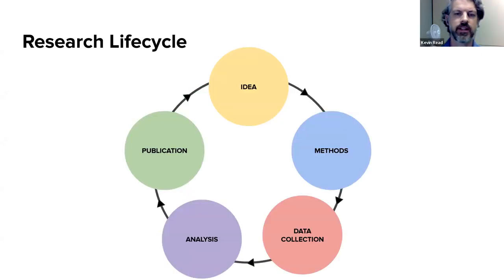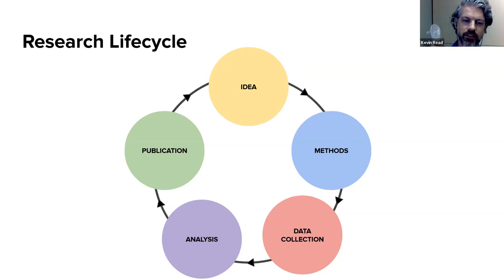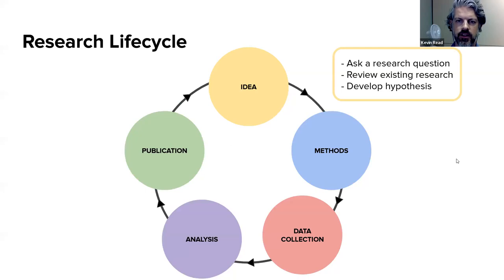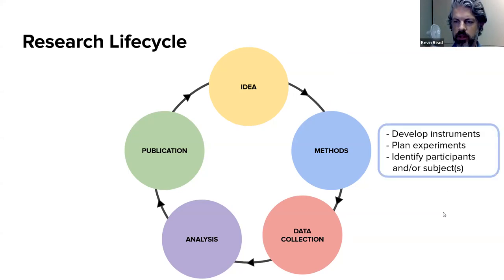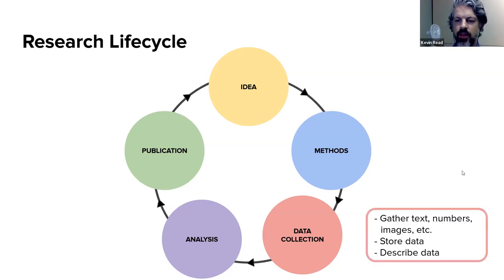Here we have a simple research life cycle: you have an idea, you develop methods to answer those ideas, you collect data, do some analysis, and then publish your results. At the idea stage you're asking a question, looking at existing research, and developing a hypothesis. At the methods stage you might be developing instruments, planning an experiment, or identifying participants. Then you're collecting data — gathering text, numbers, or images — and storing and describing that information.